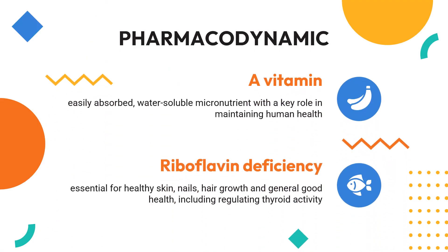Pharmacodynamics. Riboflavin, or vitamin B2, is an easily absorbed, water-soluble micronutrient with a key role in maintaining human health. Like the other B vitamins, it supports energy production by aiding in the metabolizing of fats, carbohydrates, and proteins. Vitamin B2 is also required for red blood cell formation and respiration, antibody production, and for regulating human growth and reproduction.